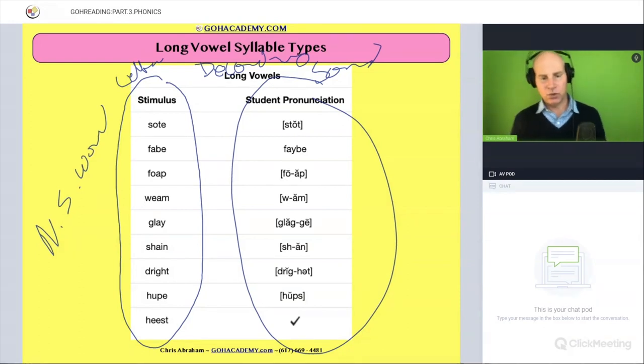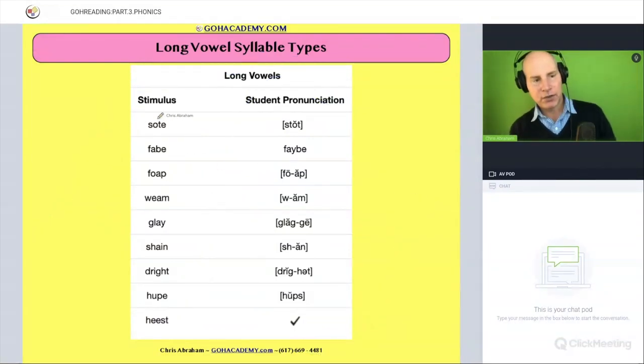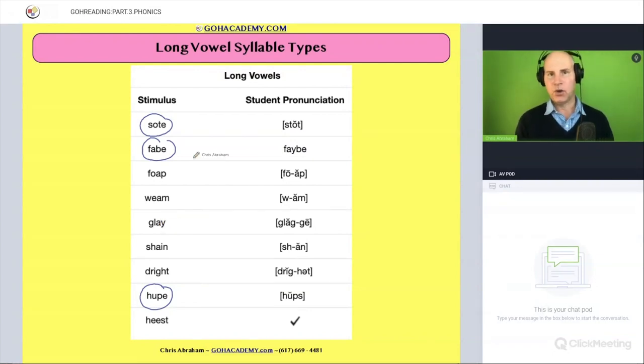Okay, so we see the student do actually pretty poorly. These are all wrong. This is the only one they got right. So let's just look and see if we can find some patterns in this assessment. And I'm going to circle these words here and see if you can notice something about the ones that I've circled. These are all what type of words? What's the syllable type? What's the phonics rule?